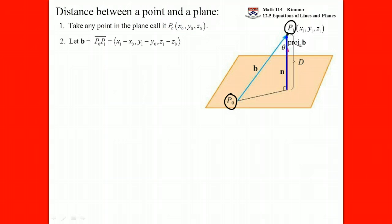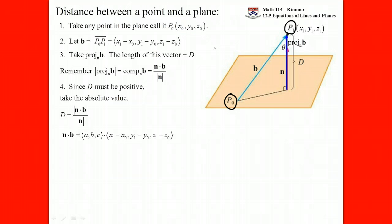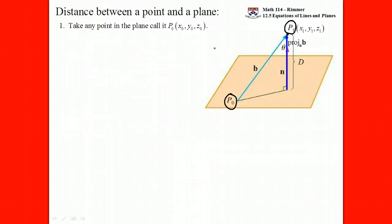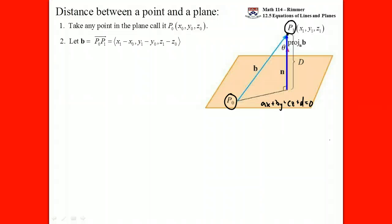The last thing we need is the equation of the plane. Generically, the equation of the plane is ax plus by plus cz plus d equals 0, lowercase d. There are two vectors we need. We need the vector from the point on the plane to our point out in space — we take the coordinates of our point and subtract the coordinates of the point on the plane: x1 minus x0, y1 minus y0, z1 minus z0. We'll call that vector v.